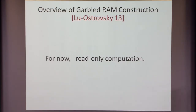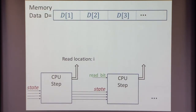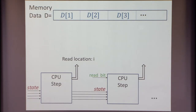Let me give an overview of the garbled RAM construction of Lu and Ostrovsky. It's a really beautiful scheme. For now I want to focus on read-only computations — assume the program just reads, never writes to the database. I want to think of a RAM computation as: the data in memory, each memory cell has one bit. The program execution is specified by a very simple CPU step circuit — that's what your laptop's CPU does. The circuit gets some state (registers, etc.), does a little computation, says 'I want to read this location,' you go to memory, read it, put it on the read bit wire, then execute the circuit again.